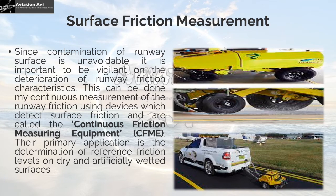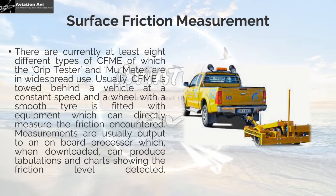Surface Friction Measurement. Since contamination of the runway surface is unavoidable, it is important to be vigilant about deterioration of runway friction characteristics. This can be done by continuous measurement using devices called Continuous Friction Measuring Equipment, or CFME. Their primary application is the determination of reference friction levels on dry and artificially wetted surfaces. There are currently at least 8 different types of CFME, of which the Grip Tester and Mu Meter are in widespread use. Usually, CFME is towed behind a vehicle at a constant speed, and a wheel with smooth tires fitted to the equipment directly measures the friction encountered. Measurements are output to an on-board processor which, when downloaded, produces tabulations and charts showing the detected friction levels.